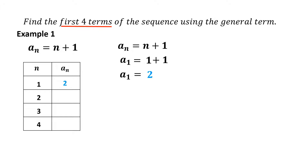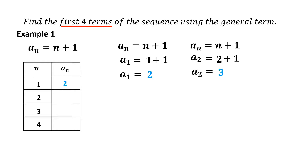Let us find the second term using the general term a sub n equals n plus 1. Substitute n equals 2: a sub 2 equals 2 plus 1, which equals 3. Therefore, the second term of the sequence is 3.